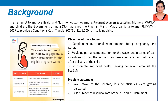Under the scheme, a cash incentive of Rs 5,000 is provided directly to the beneficiary in their bank accounts for their first living child, subject to the fulfillment of specific conditions related to mother and child health. Concrete monitoring of the scheme showed that there was a low uptake, and additionally the dispersal rate of the second and third installments was also low.